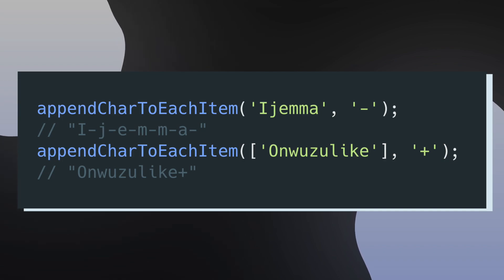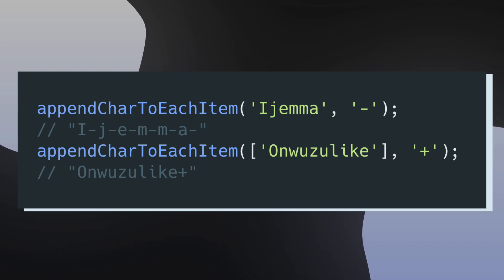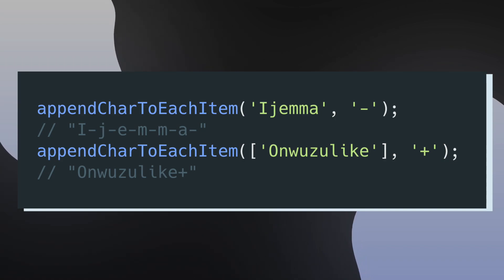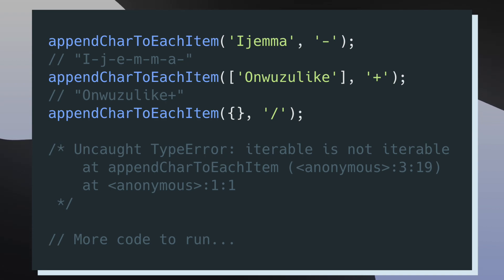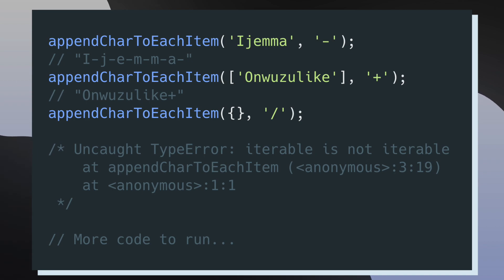I can also call this function on an array — I pass in an array with only one item, my last name, and then pass in the plus character, getting the final string with a plus at the very end. So far so good, this function is working as expected. But let's see what happens when we pass in a literal object. I pass in an empty object and a forward slash as the second argument. Instead of getting an expected string output, I get an uncaught TypeError saying that iterable is not iterable. This is a bad situation because our application code wasn't prepared to handle any error thrown from our function, and we wouldn't be able to execute future blocks of code.